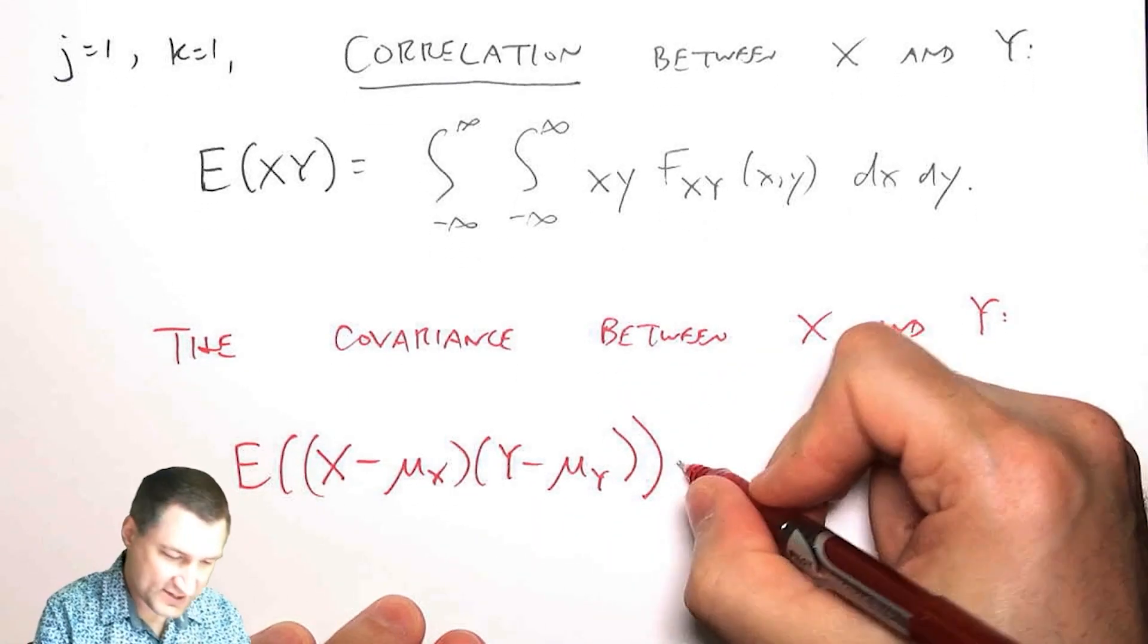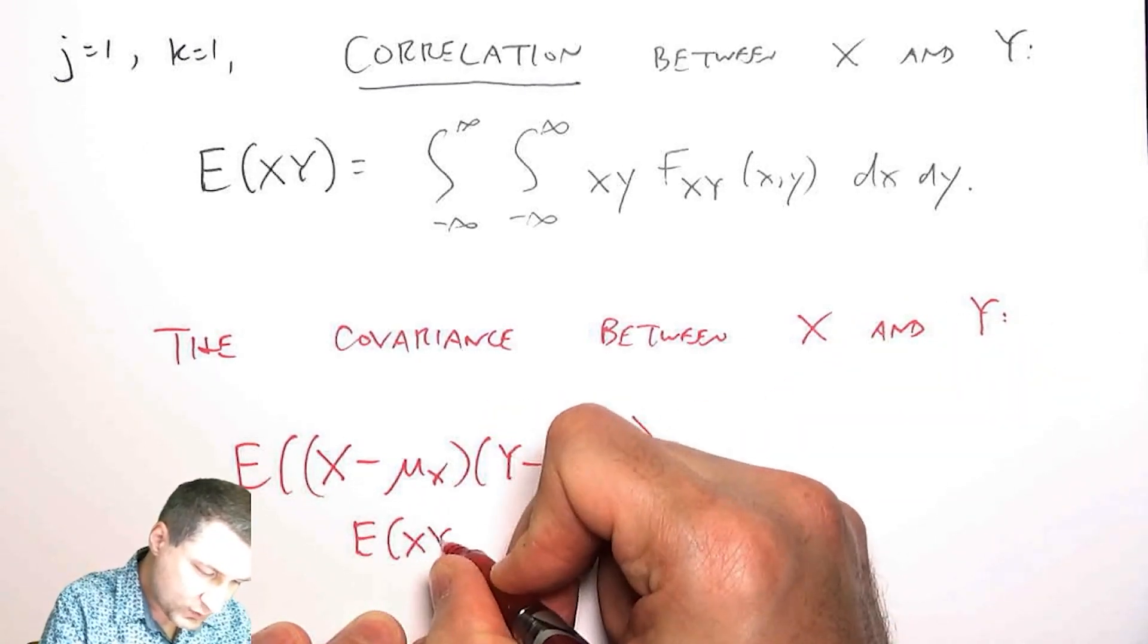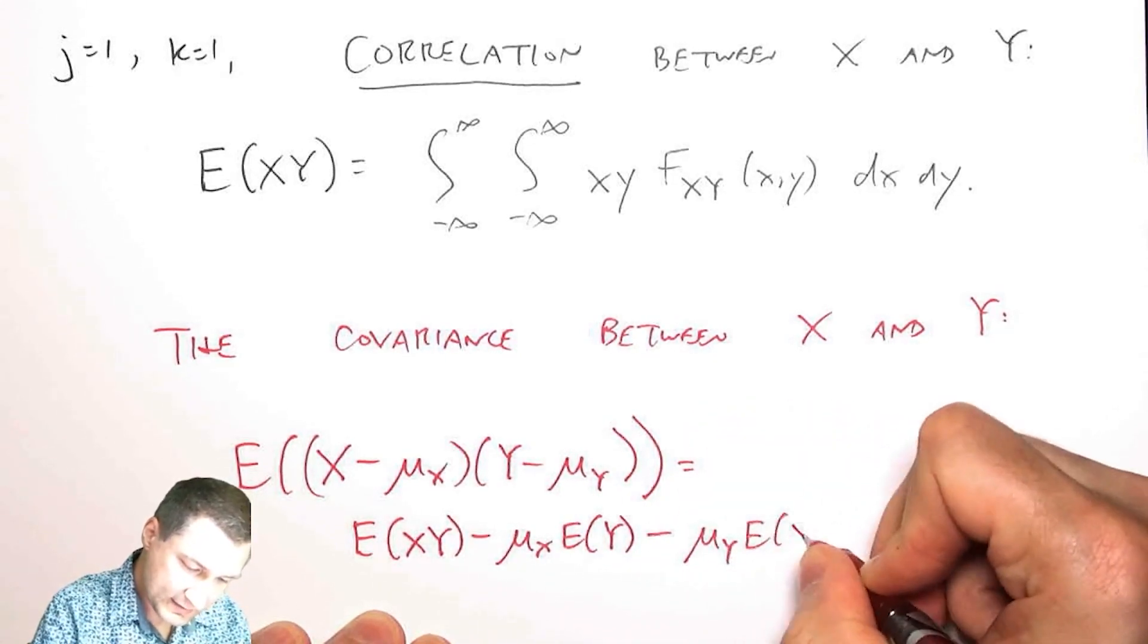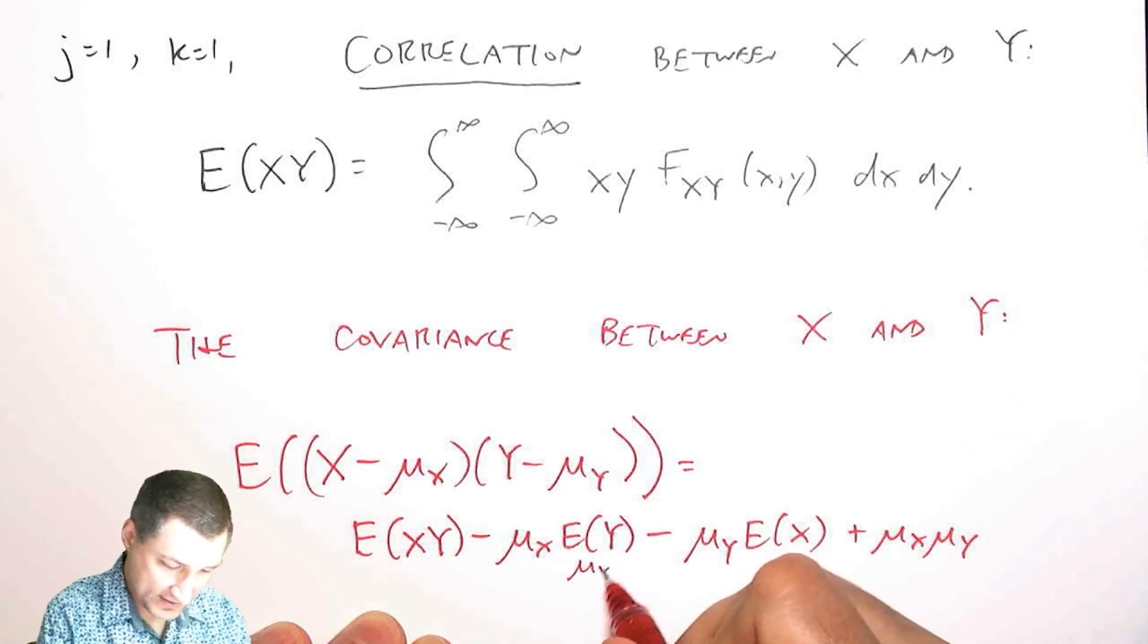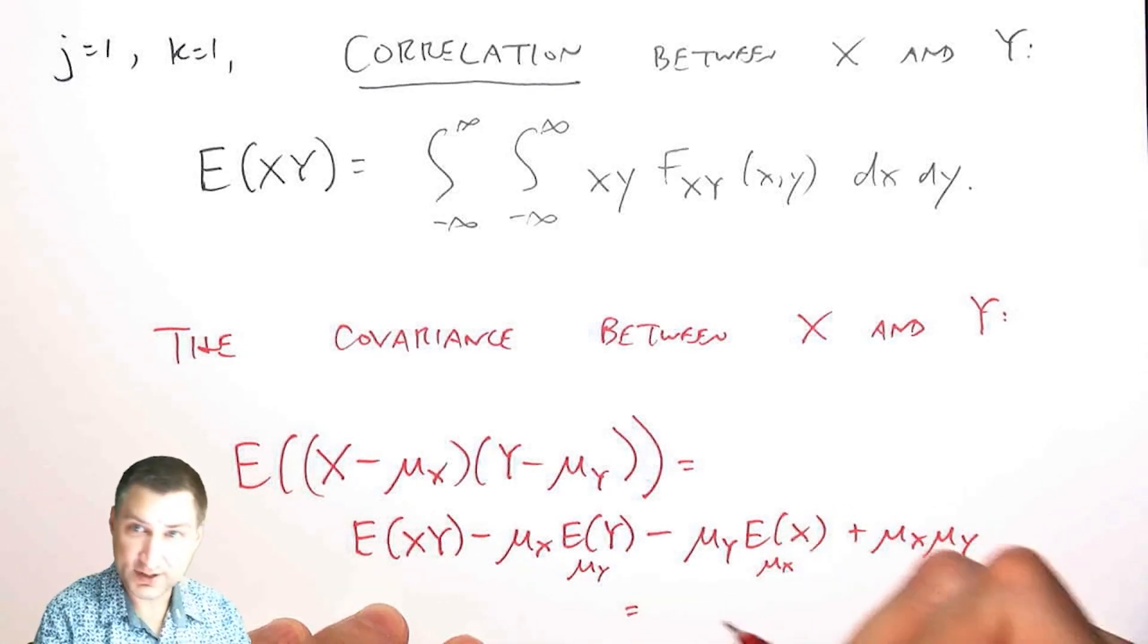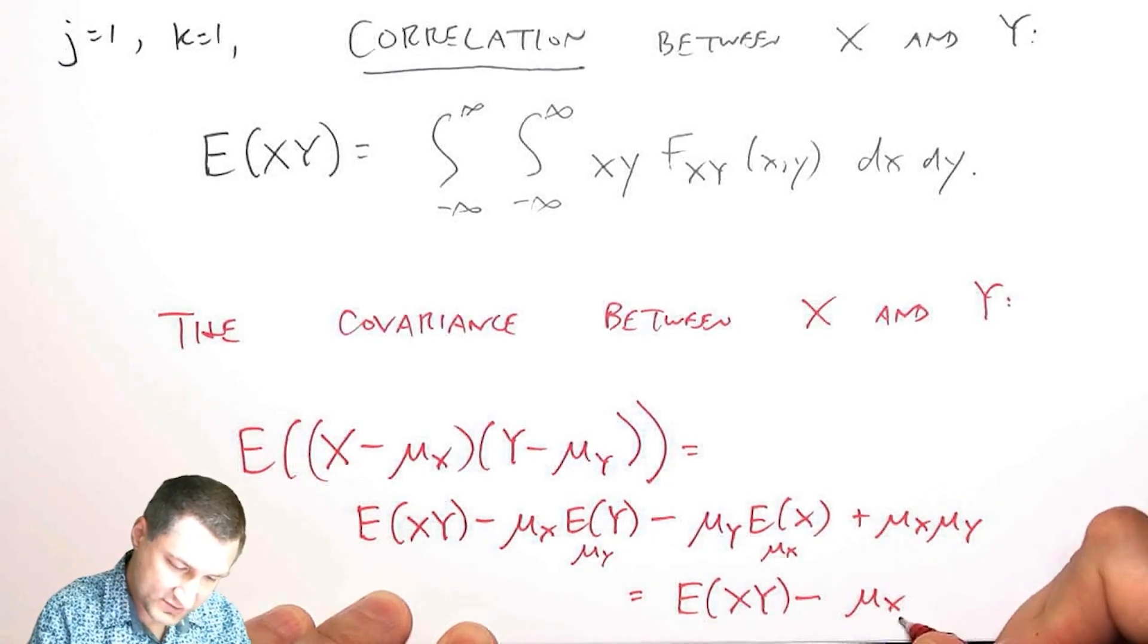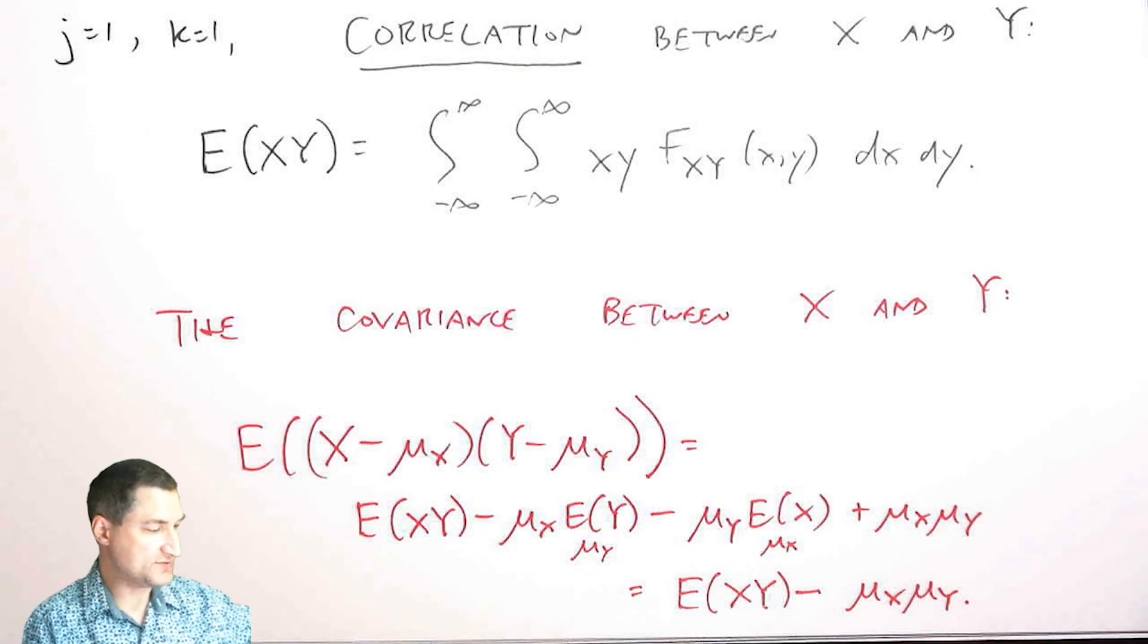And by linearity, I can work this out to say, okay, well, this is like the expected value of X, Y minus mu_X E of Y minus mu_Y E of X plus mu_X mu_Y. And I can actually see that this is the same as mu_Y. This is the same as mu_X. And so I get some cancellations. And what I actually find out is that this is equal to the expected value of X, Y minus mu_X mu_Y. So it's like the correlation minus the product of the means.